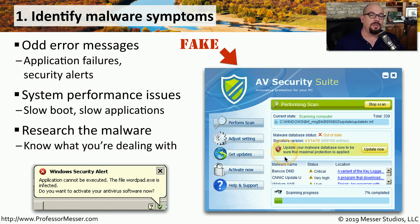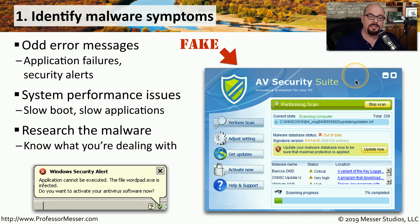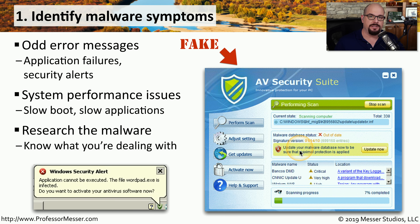One of the things you can do is research the messages you're seeing on your screen to see if they might correlate back to some known malware. Look at the applications running on your computer — things that say AV Security Suite and claim to be performing a scan and protecting your system may actually be malware that is damaging your system.